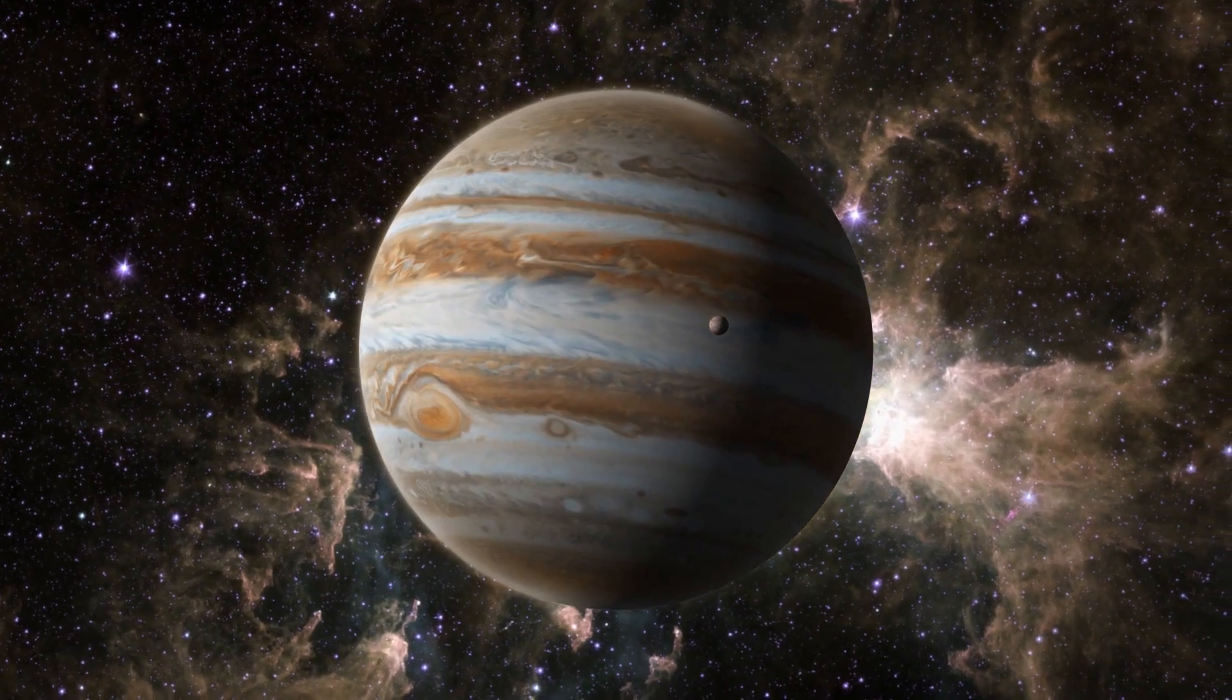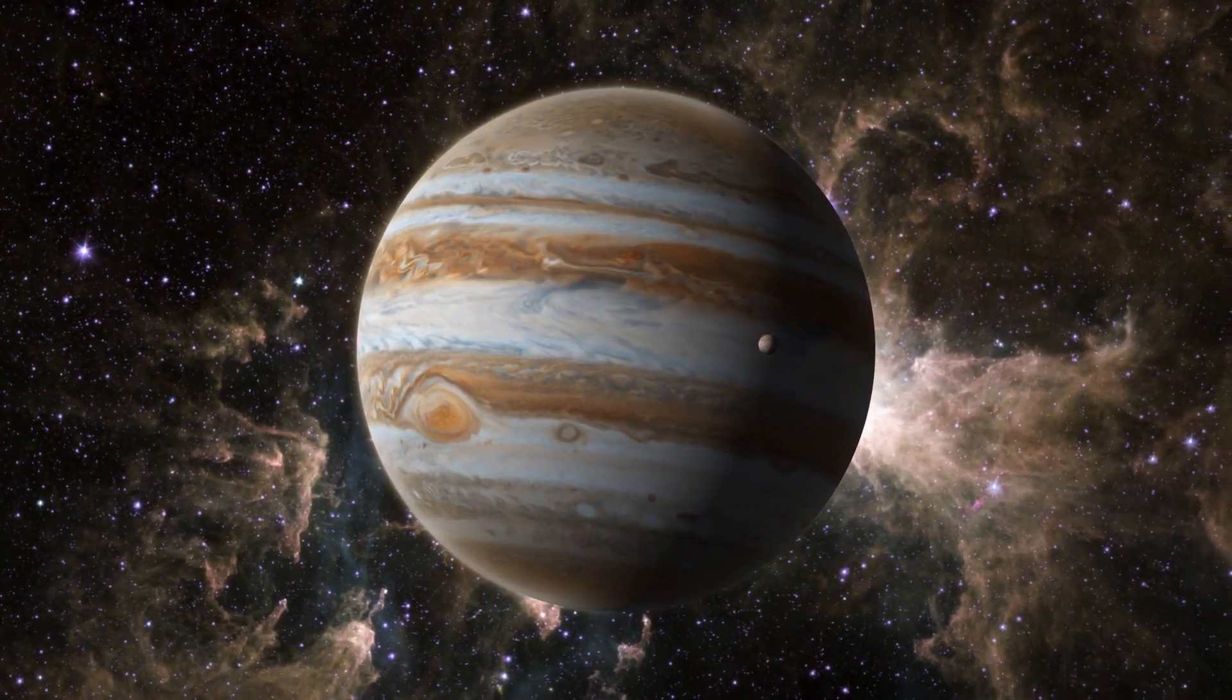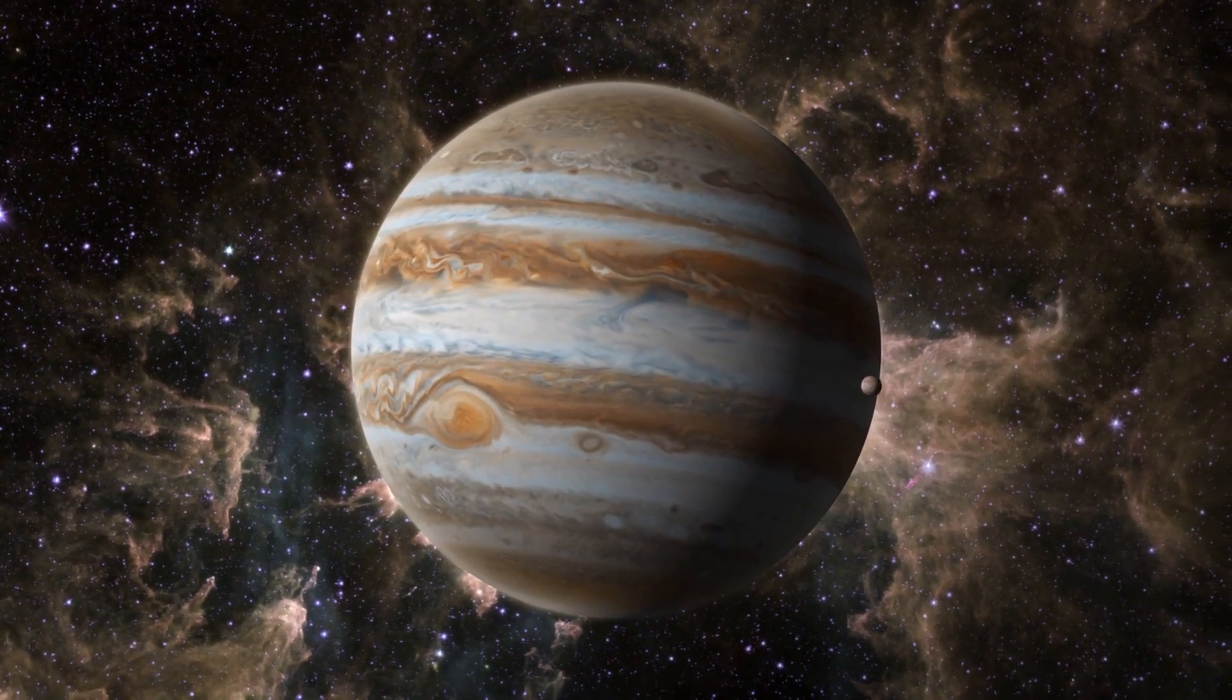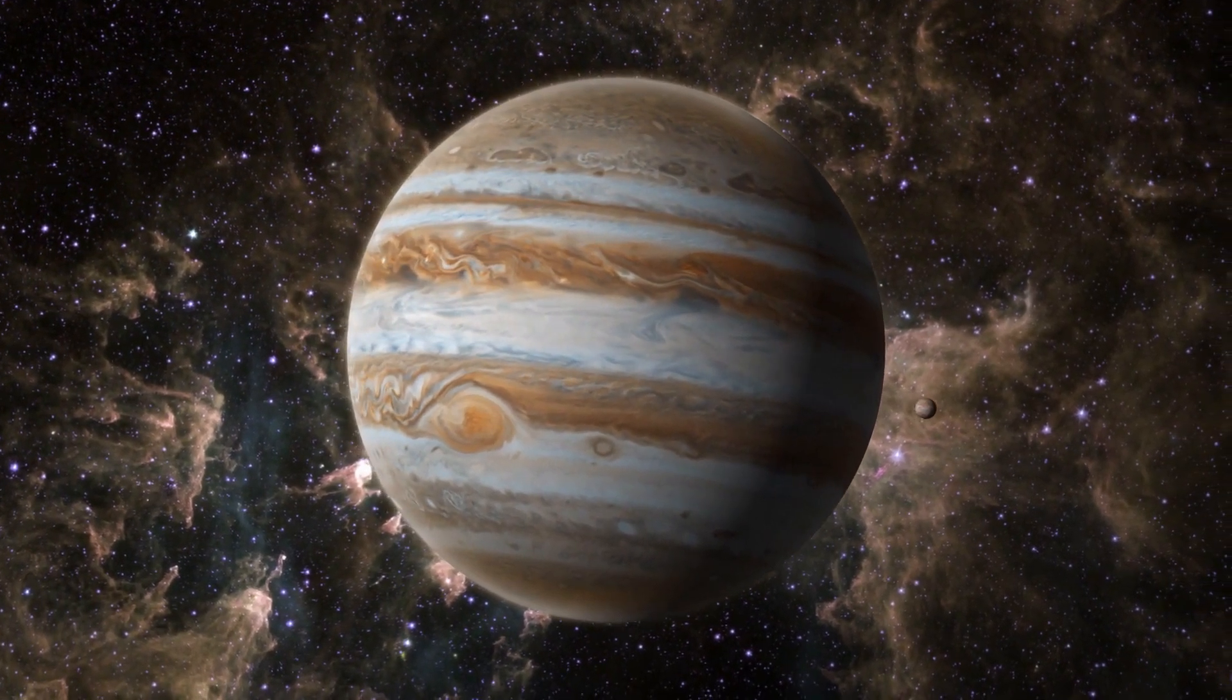The white dwarf ingests gas from the giant star, forming a blazing hot disk around it. This disk can unpredictably undergo thermonuclear explosions as the infall of hydrogen grows denser.